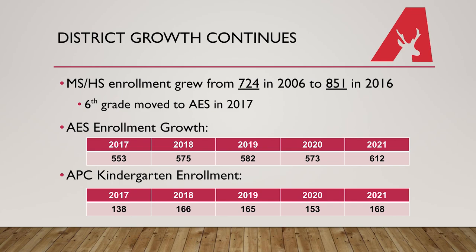Moving beyond 2014, we can see how our district has continued to grow by looking at the enrollment of our middle school and high school, which grew from 724 students in 2006 to 851 students in 2016. In 2017, we moved our 6th grade down to the elementary building due to increased enrollment. Looking at the elementary building from 2017 to 2021, we continue to see growth — from 553 students in 2017 to 612 students today. We can also see growth through our kindergarten enrollment, which was 138 students in 2017 and has since grown to classes in the mid-160s.